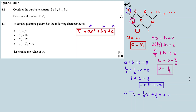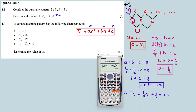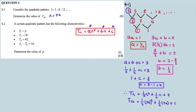Since we want T26, we substitute n equals 26 into the formula: T26 equals 1/2 times 26 squared plus 1/2 times 26 plus 2. This gives the answer 353. That is our final answer — term number 26 equals 353.